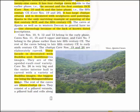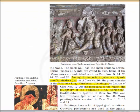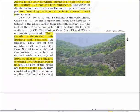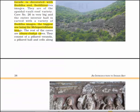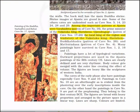The rest of the caves are Vihara-Chaitya caves consisting of a pillared veranda, a pillared hall and cells along the walls. Here you will see a view of Ajanta caves. Here is the sculptural panel in the veranda of cave number 2. Here you will see the painting of Buddha, Yashodhara and Rahul in cave number 17 of Ajanta. The back wall has the main Buddha shrine and shrine images at Ajanta are grand in size. Some of the Vihara caves are unfinished, such as cave numbers 5, 14, 23, 24, 28 and 29.